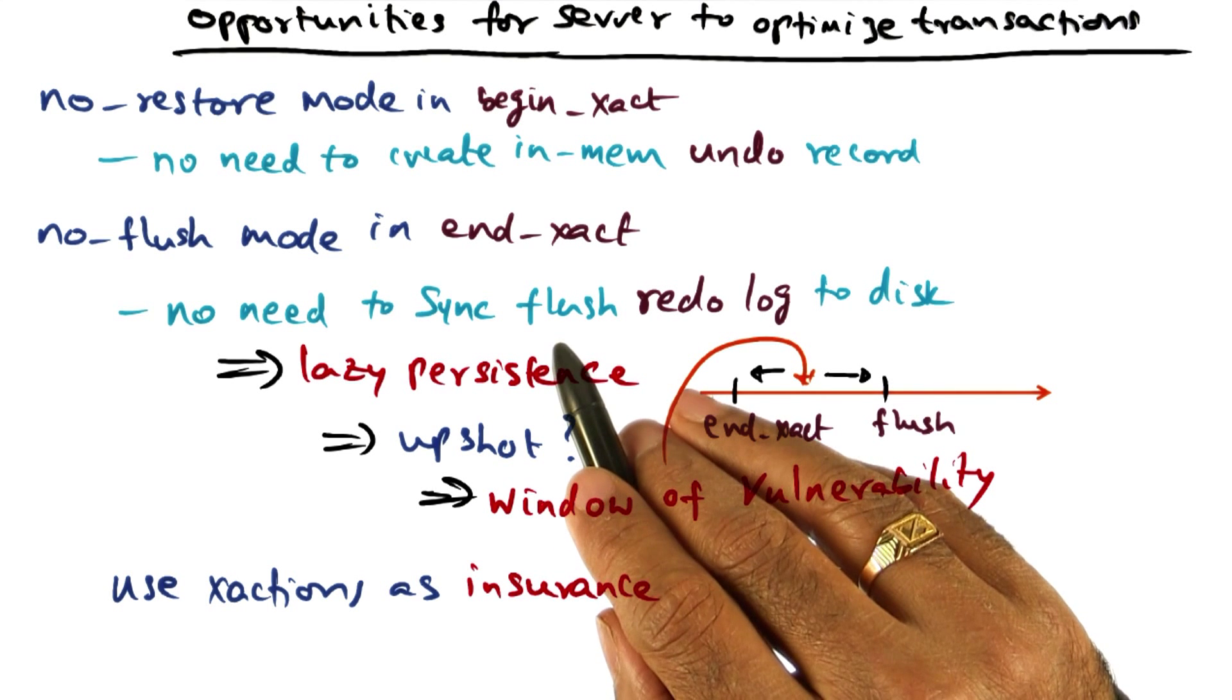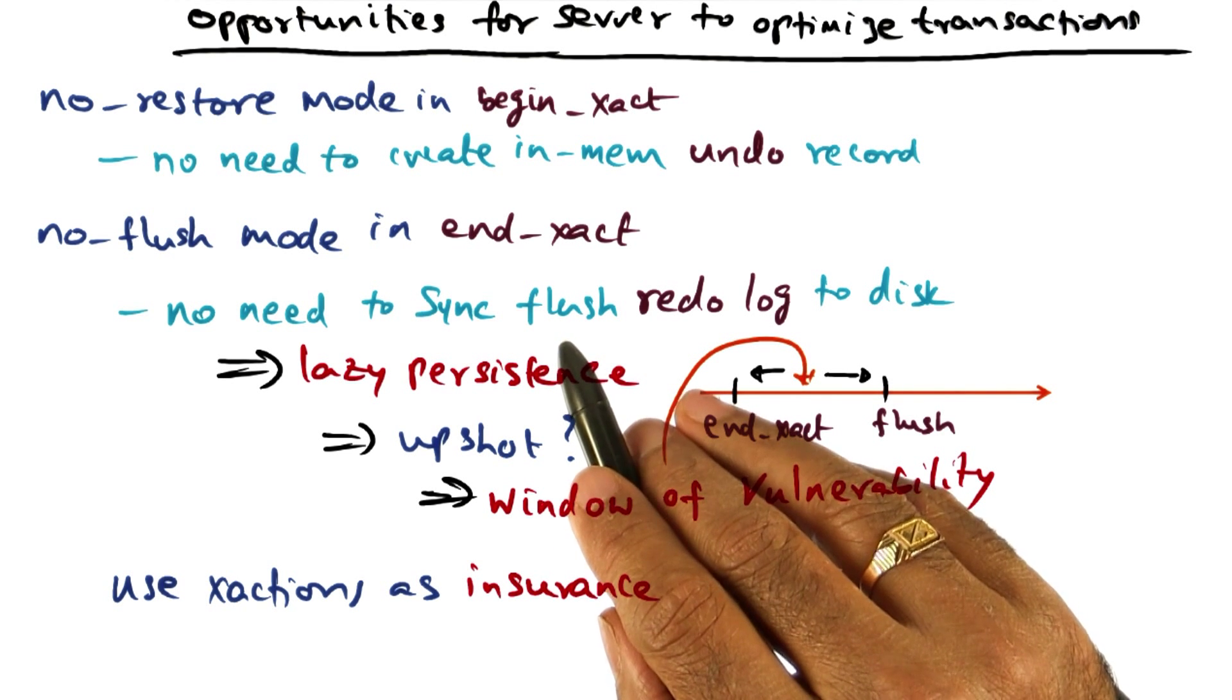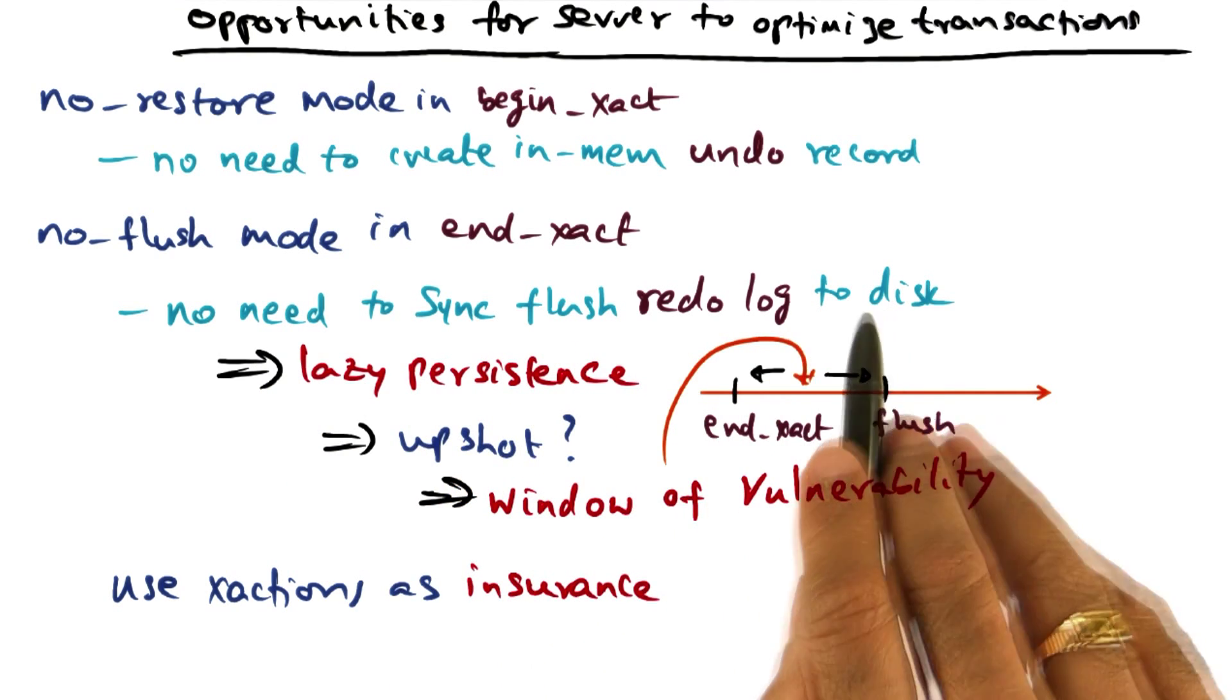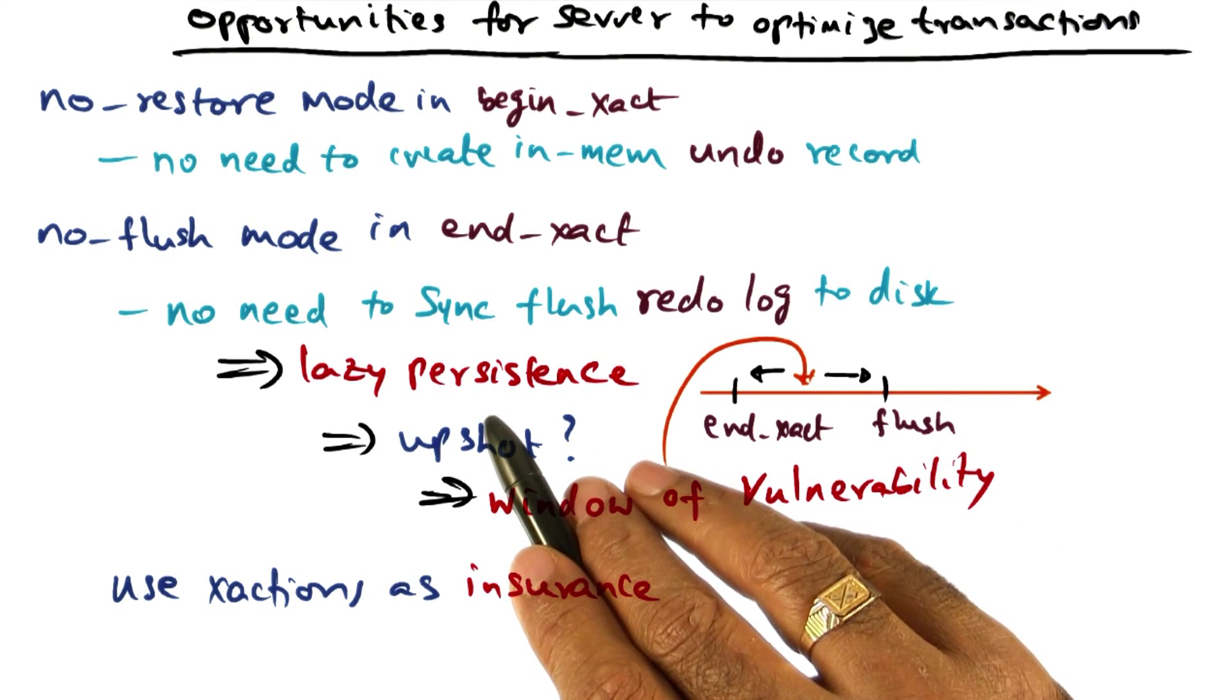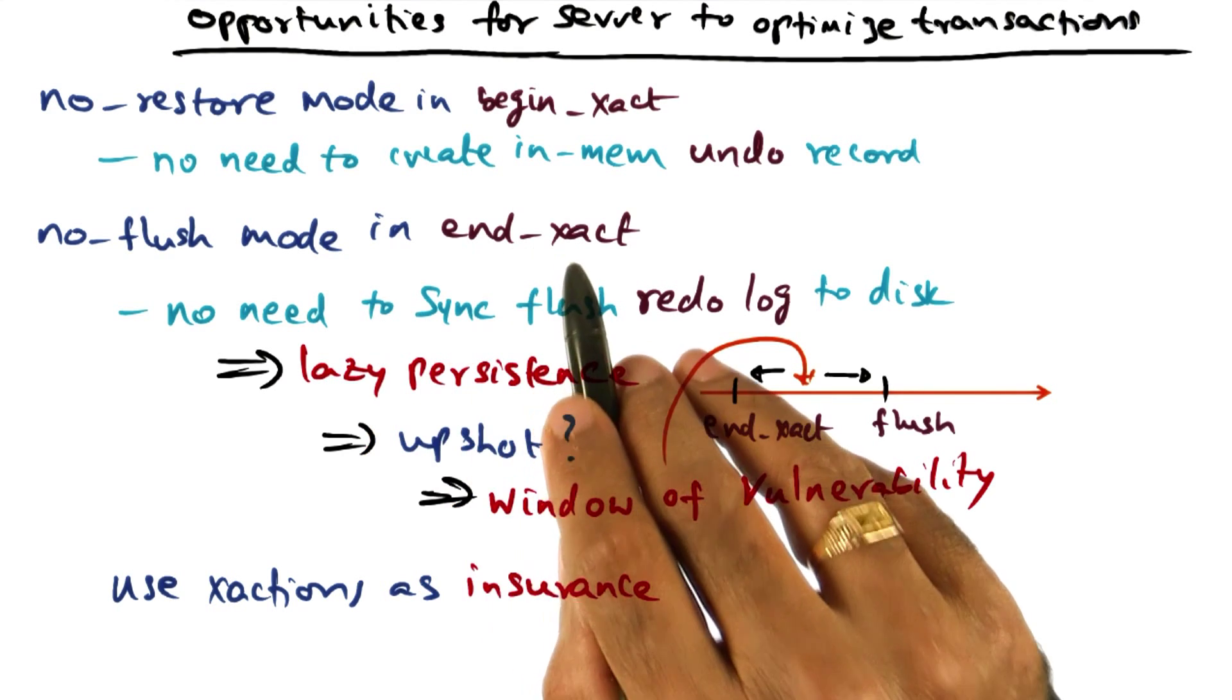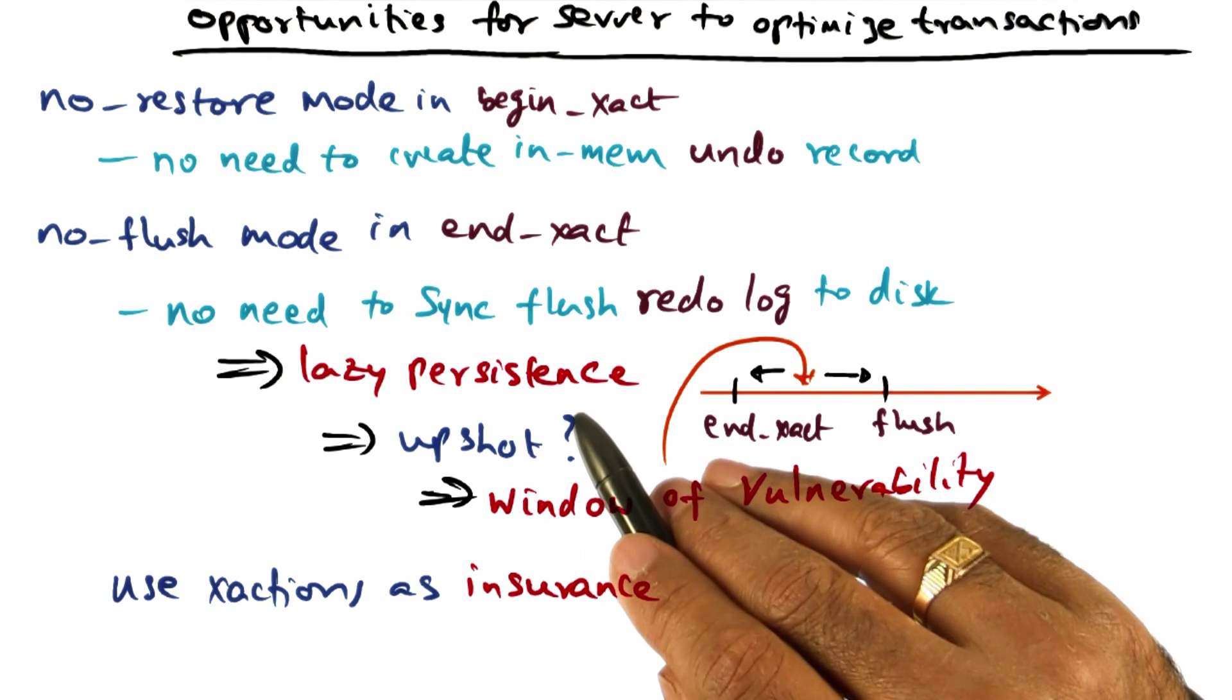Of course, I want you to write it to the disk, but don't block me in order to write to the disk. So no need to do the synchronous flush of the redo log to the disk. And in other words, what we are getting by doing a no flush mode in end transaction is lazy persistence.